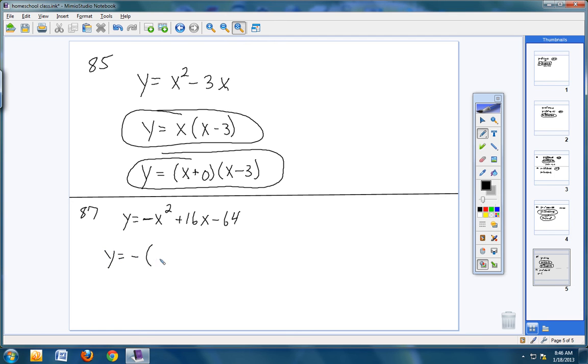So let's pull a negative sign out. And then we'll go through and change all of the signs. So your negative x squared became positive. Your positive 16 became negative. And your negative 64 became positive.